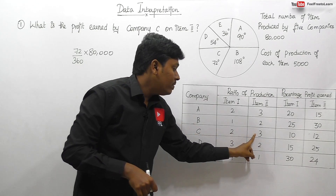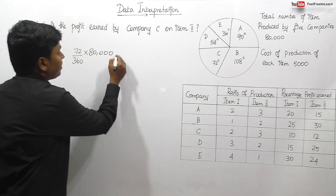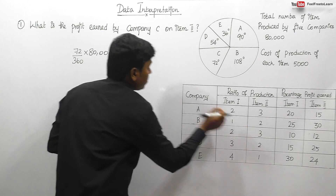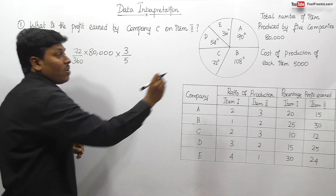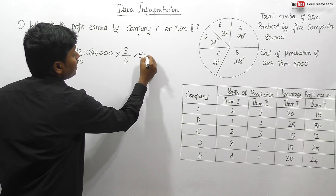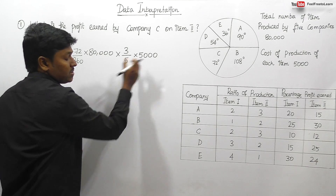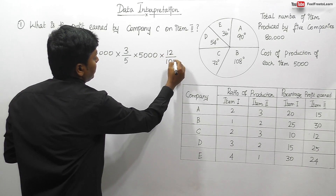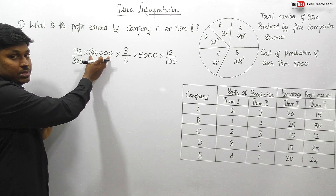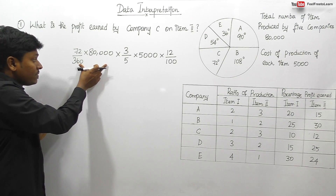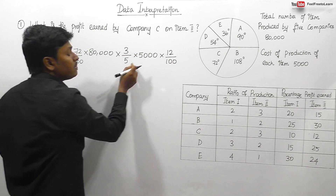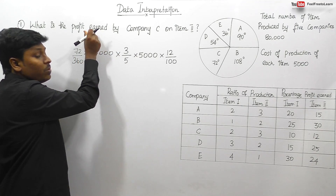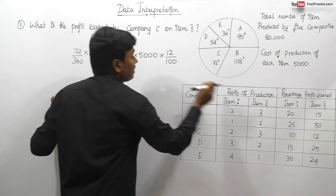For company C, item number two is 3 parts out of a total of 5 parts, so that's 3 divided by 5. We write all values in a single step to cancel easily. The cost of production for each item is 5,000. The profit percentage earned by company C on item number two is 12%, written as 12 divided by 100.